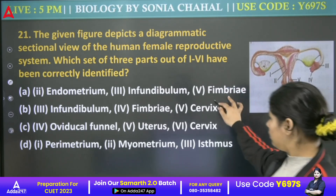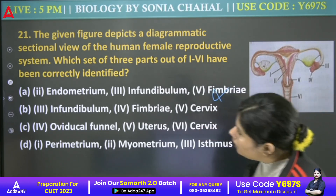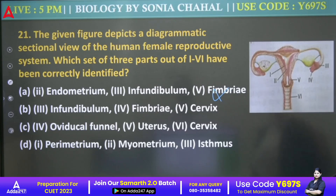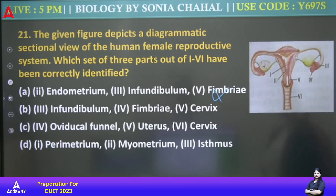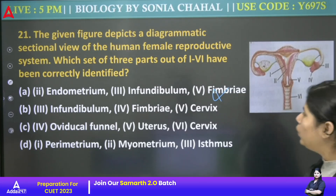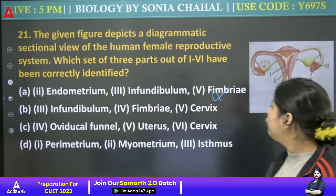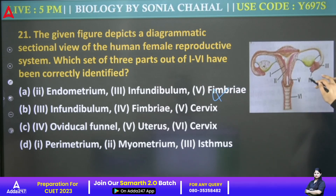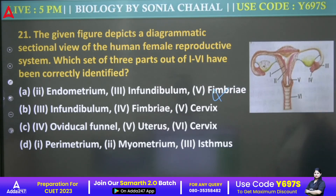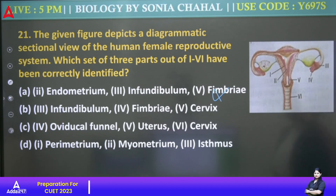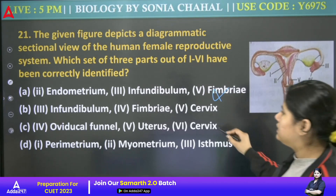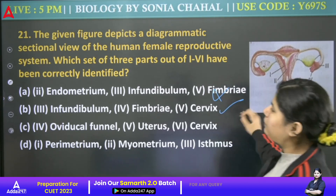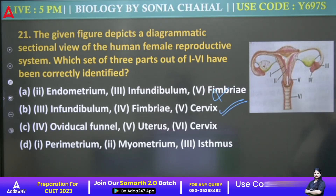Fifth is fimbriae — that's wrong. Third is infundibulum — no. Fourth is fimbriae — correct. Fifth is cervix — yes, that's true. All of these are true, but let's look at the other option: fourth is oviductal funnel — that's a big no, that's wrong.